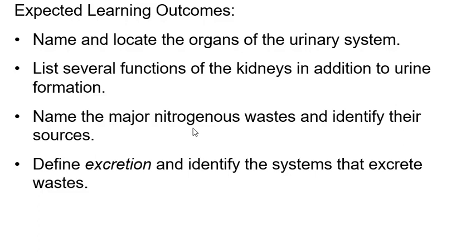Most people who die in the hospital die from a buildup of nitrogen waste in their bloodstream. So doctors can estimate when a patient will pass by monitoring the buildup of nitrogen waste in the blood. If we put it on death certificates, buildup of nitrogen waste would be the number one killer — but instead we say the person was sick with something, and what finally got them was the nitrogen waste.